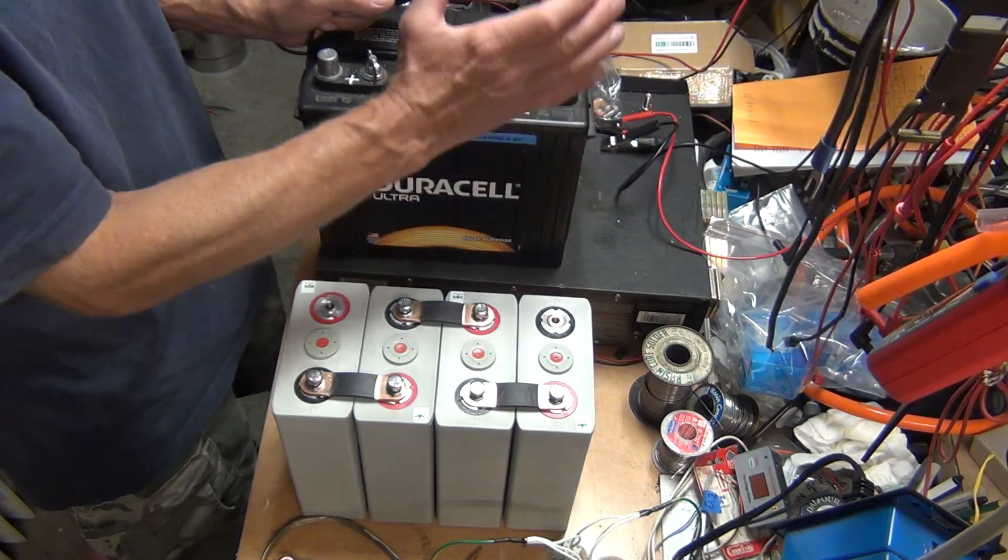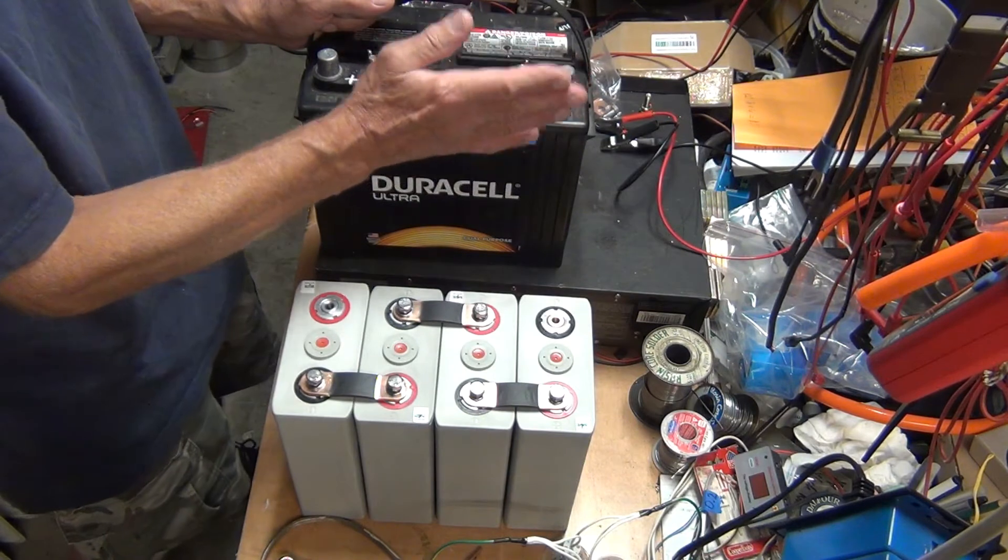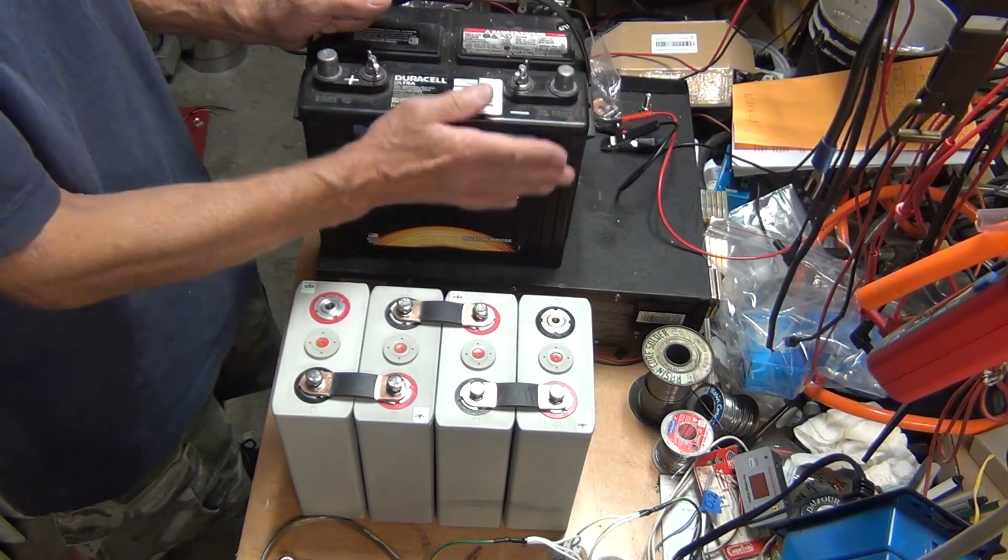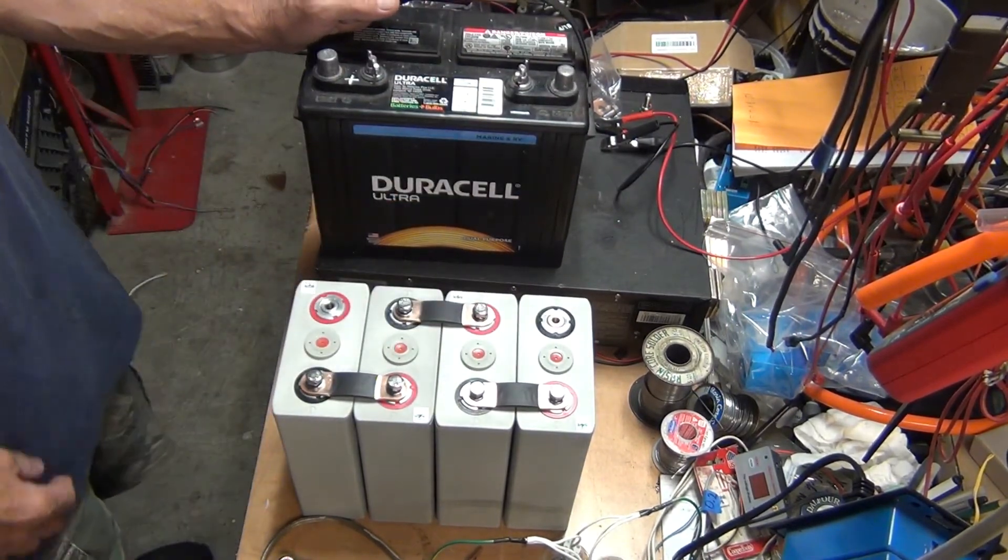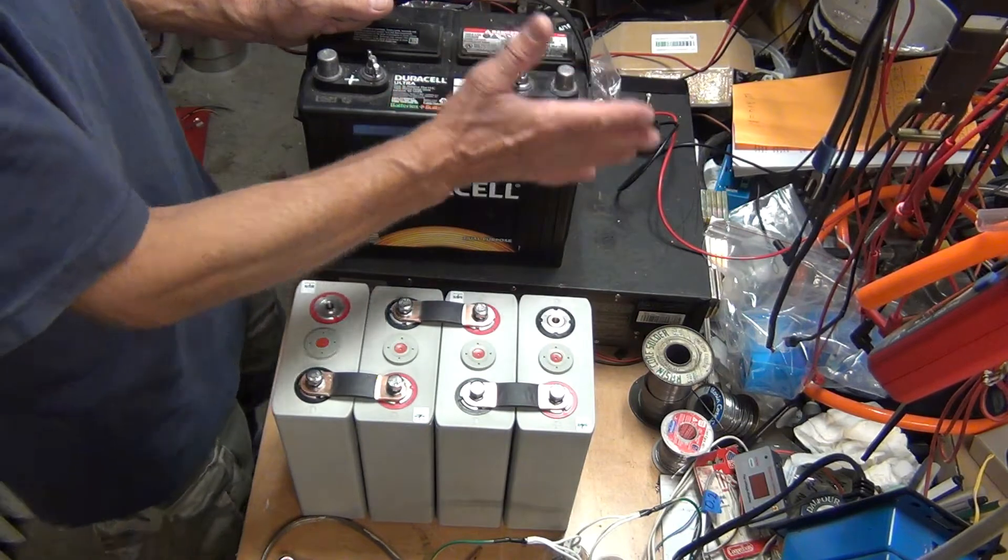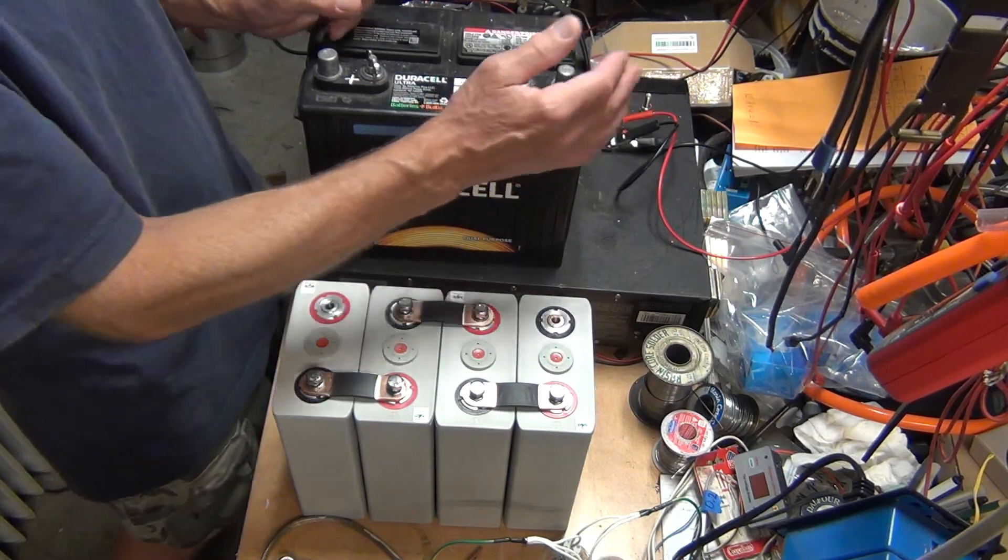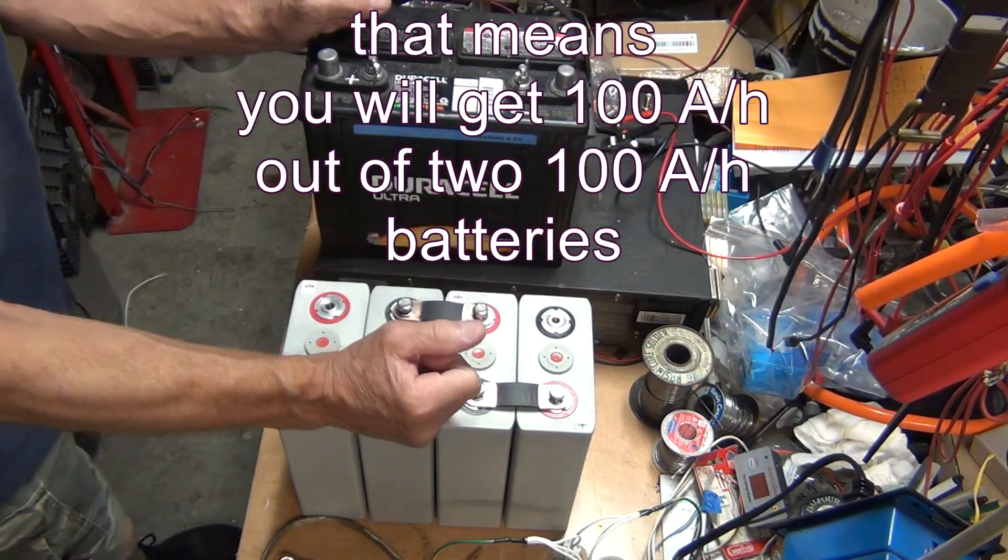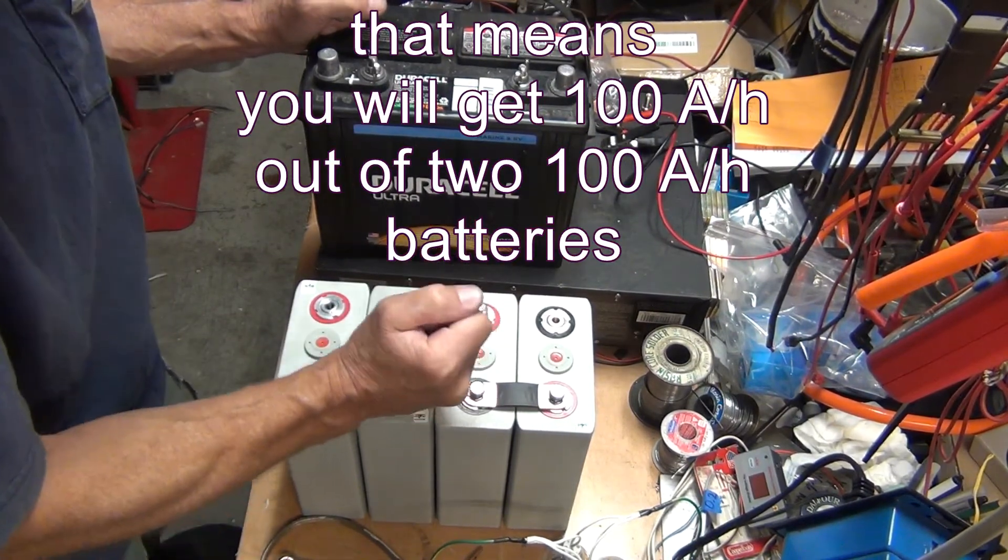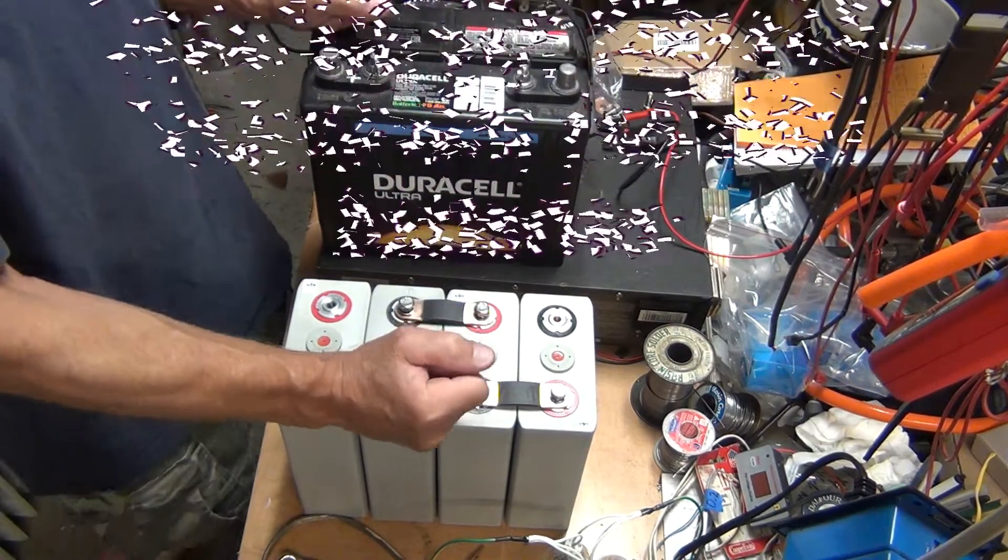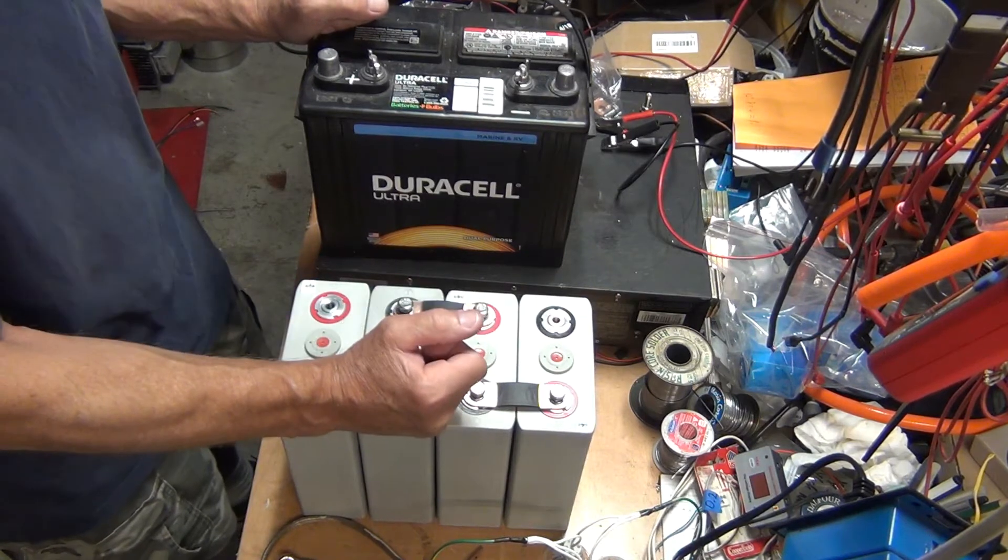So I paid for two of these to get 100 amp hours. Actually, you need two 100 amp hour batteries because you will get only 50 amp hours out of it. If you're gonna get 100 you're gonna kill it. So you need two 100 amp hour batteries to get actually 100 out of them. So that means 200 amp hours, this one is 100.